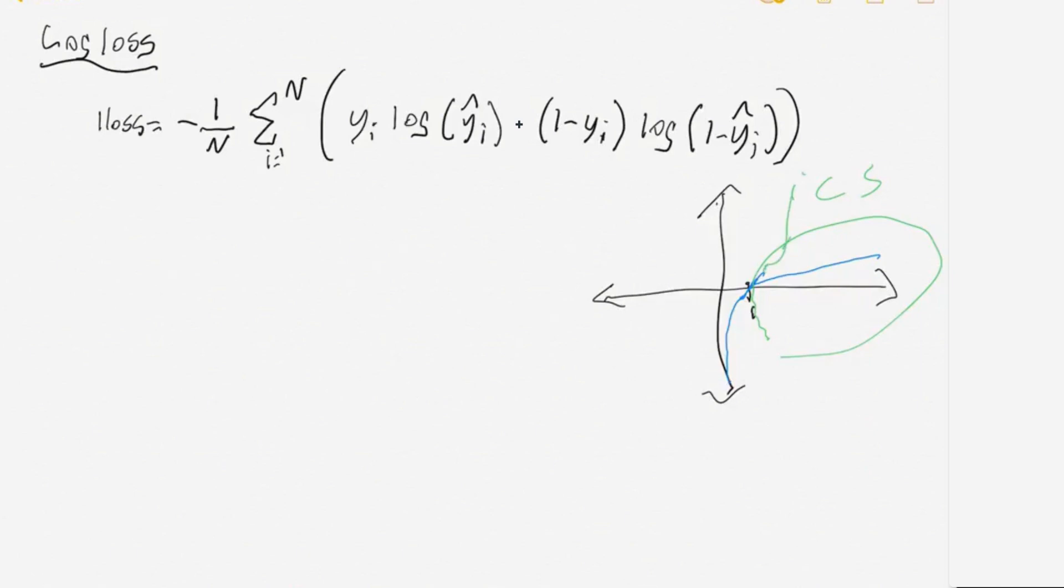But that part of the logarithm graph is not what we're interested here in the realm of data science or machine learning. Data science and machine learning is more interested in this segment of it. That is where we use to analyze error. So this is the data science region.